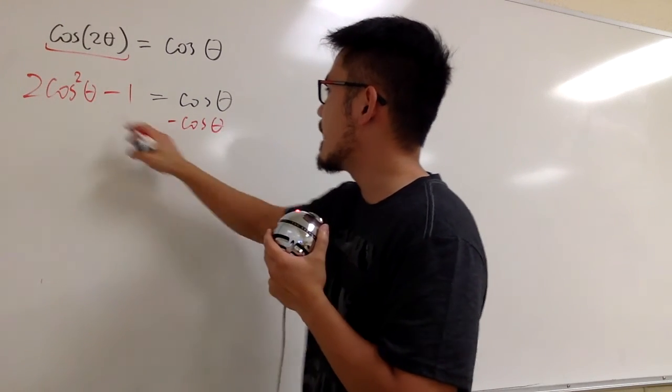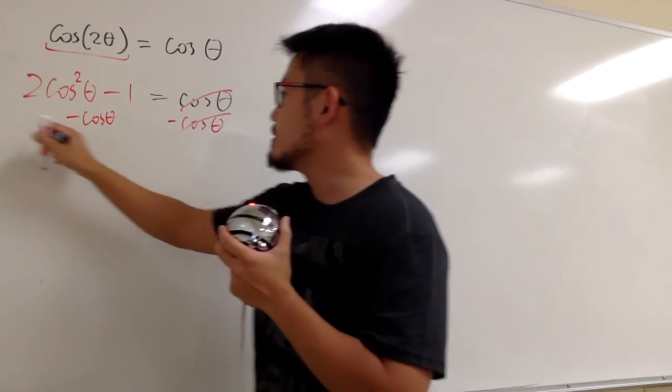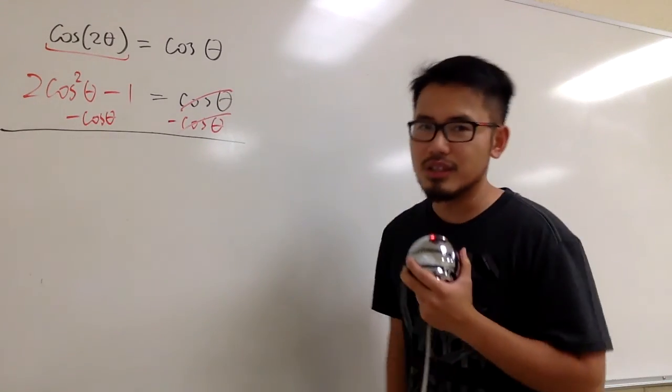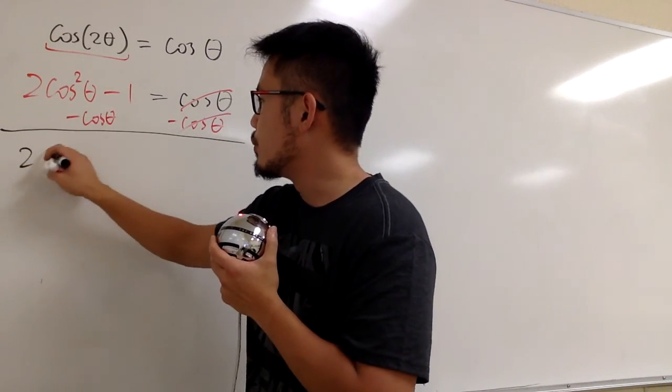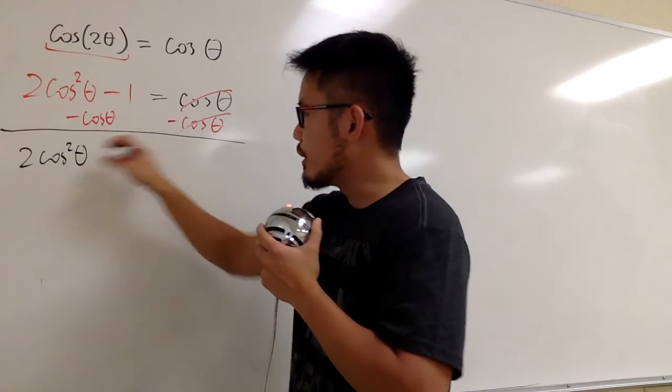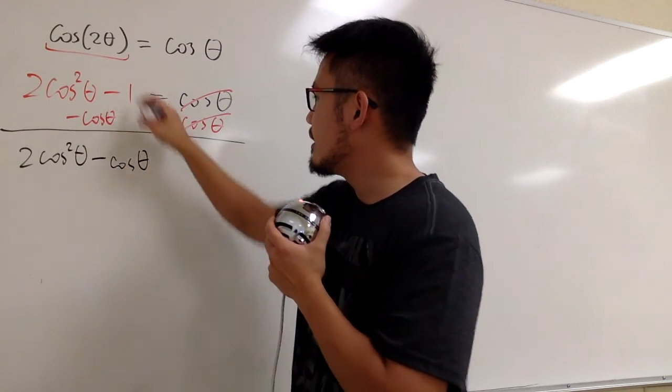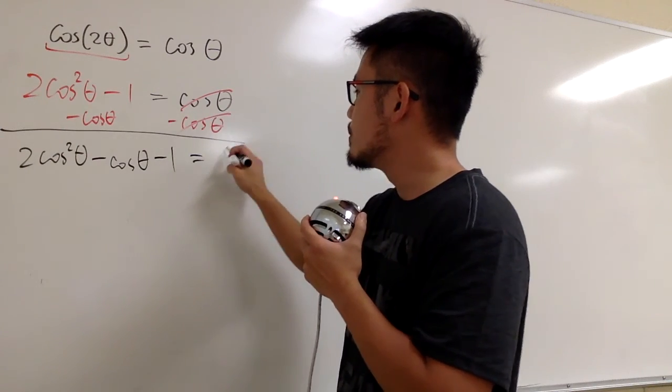So, let's continue. Let's minus cosine θ on both sides. And this is going to be one of the equations that we have to factor, just like a quadratic equation. First, let's put down 2 cosine squared θ. Nothing can be cancelled out, okay? So we just have to write it down as it is. Minus cosine θ and then minus 1. This is equal to 0 now.